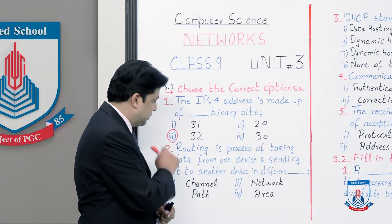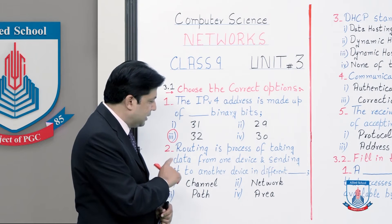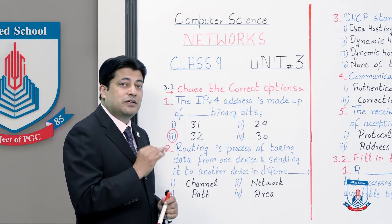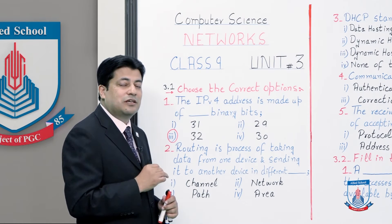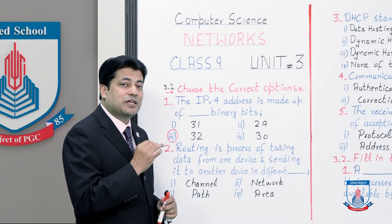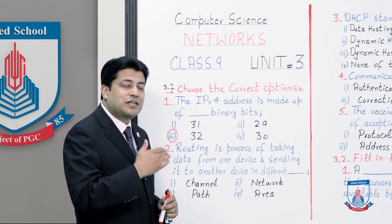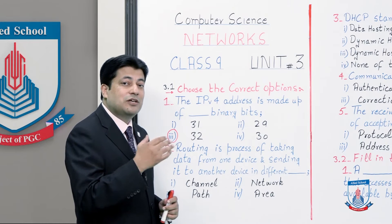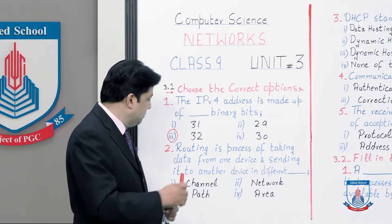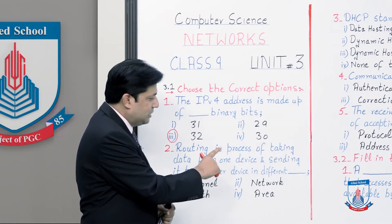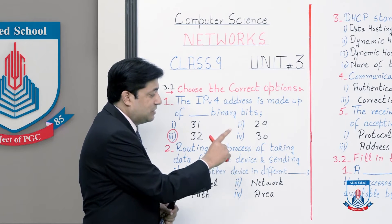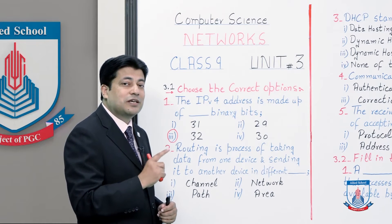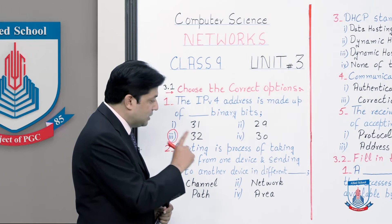Number 2: Routing is the process of taking data from one device and sending it to another device in a different dash. Routing means the router device transfers packets from one network to another — not within devices, but between different networks. So the answer here will be 'network.'